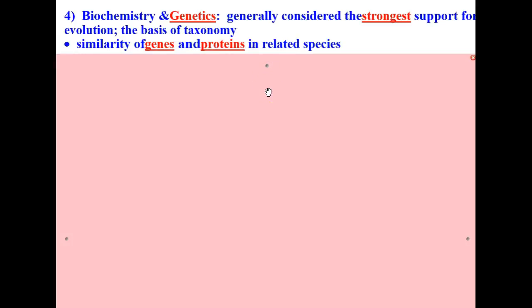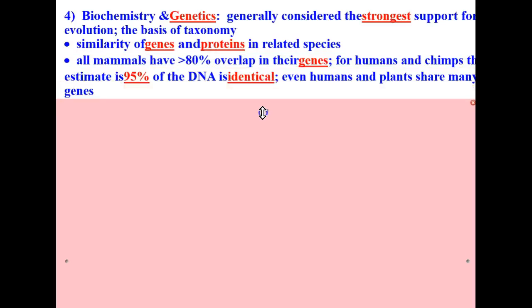Biochemistry and genetics show similarity of genes and proteins in related species. In fact, all mammals have greater than 80% overlap in their genes. For humans and chimps, the estimate is 95% of the DNA is identical. Even humans and plants share many genes.